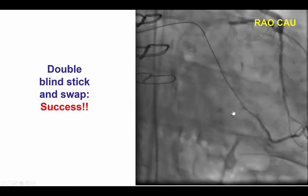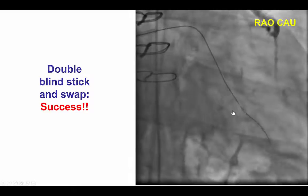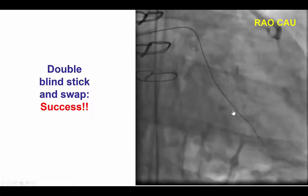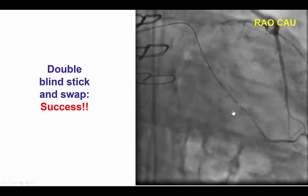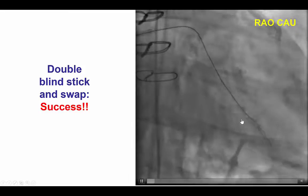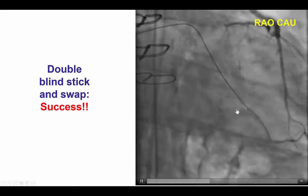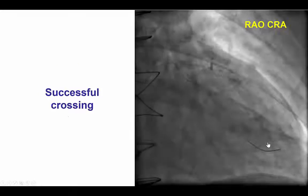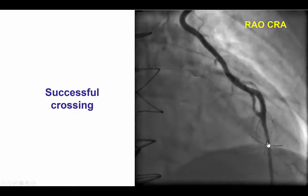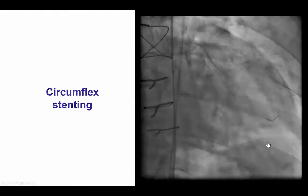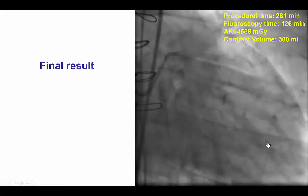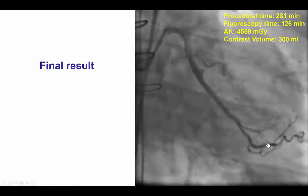We were actually about to give up — it had been several hours into the case — but we decided to do a final attempt using a new Stingray balloon, as the previous one was damaged. This time, we were able to advance a Gaia guide wire into the distal true lumen, confirmed with contralateral injection. We then advanced a workhorse wire and placed stents in the circumflex all the way to the left main, successfully recanalizing the CTO.